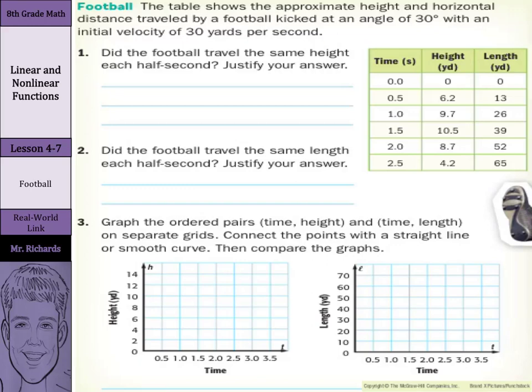Our real-world link is on football. The table shows the approximate height and horizontal distance traveled by a football kicked at an angle of 30 degrees with an initial velocity of 30 yards per second.